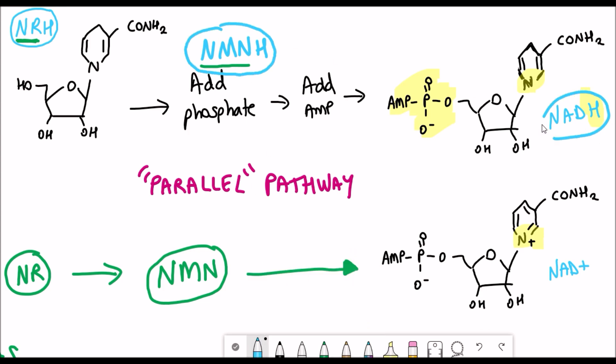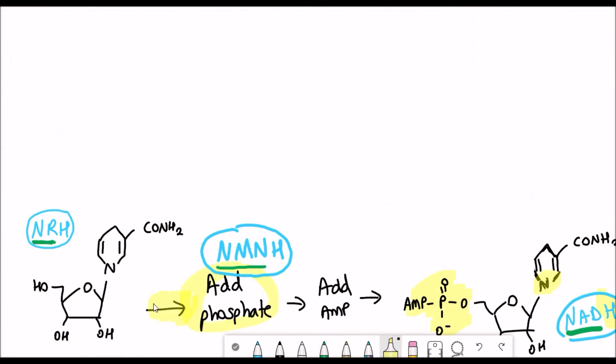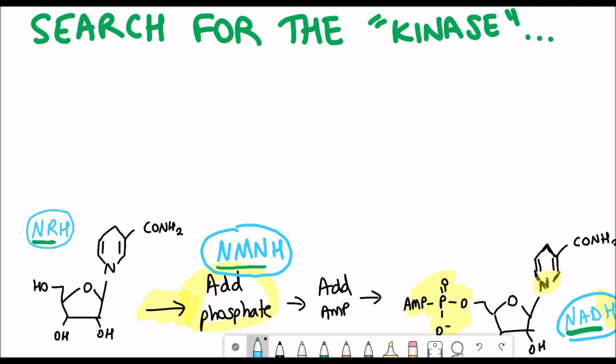I said it was going to get a little bit complicated, but anyway the main point, what they were trying to do in this paper was to find the protein that converts NRH and adds phosphate to it to form NMNH. The fancy biochemical name that we give to proteins that have this activity are kinases.